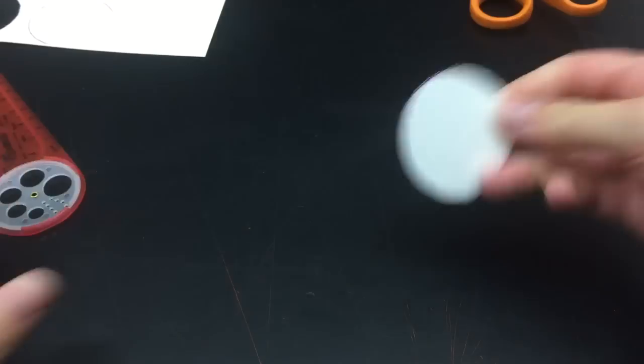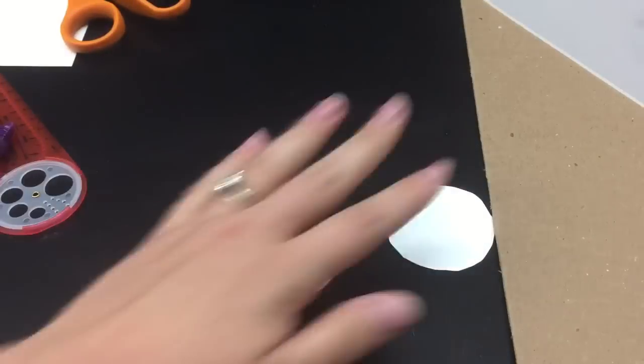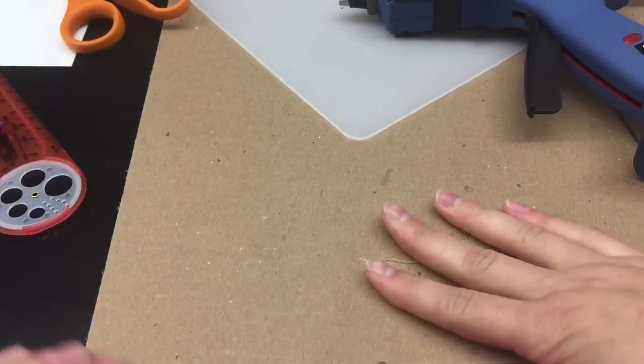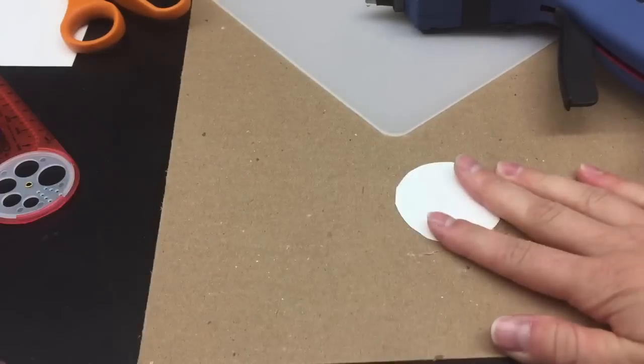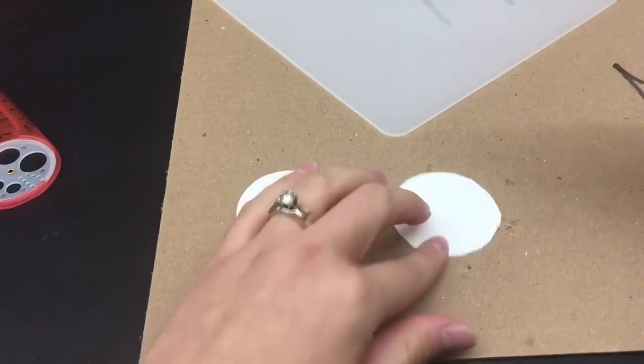I already have my other one cut out, so I'm going to use these two. Now I need my hot glue gun, so I'm going to pull over my hot glue mat and my hot glue gun and all my pieces.